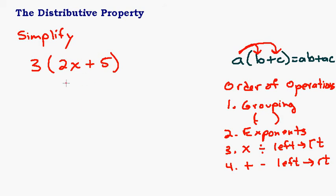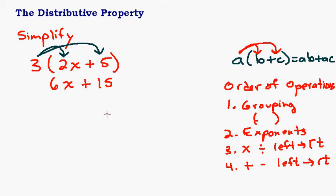Since I can't do what's in the parentheses first, the only way to get rid of these parentheses is to use the distributive property. I have to take 3 times everything in the parentheses: 3 times 2x, and 3 times 5. Three times 2x is 6x, plus 3 times 5 is 15. Now I'm done, because these are not like terms, so I cannot combine them together.